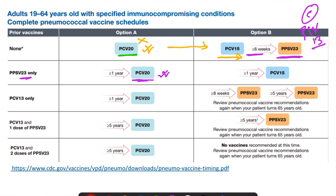If the patient has received PCV13 only, after one year, the patient can receive PCV20 with no further vaccine required. Alternatively, after 8 weeks, the patient can be vaccinated with PPSV23, then again after 5 years with the next PPSV23 dose. Once the patient reaches age 65, vaccination recommendations should be reviewed and decided accordingly. If the patient has already received PCV13 and one dose of PPSV23, after 5 years they can receive PCV20 with no further vaccine recommended. Or, after 5 years, the patient can receive a second dose of PPSV23, with further doses depending on age.